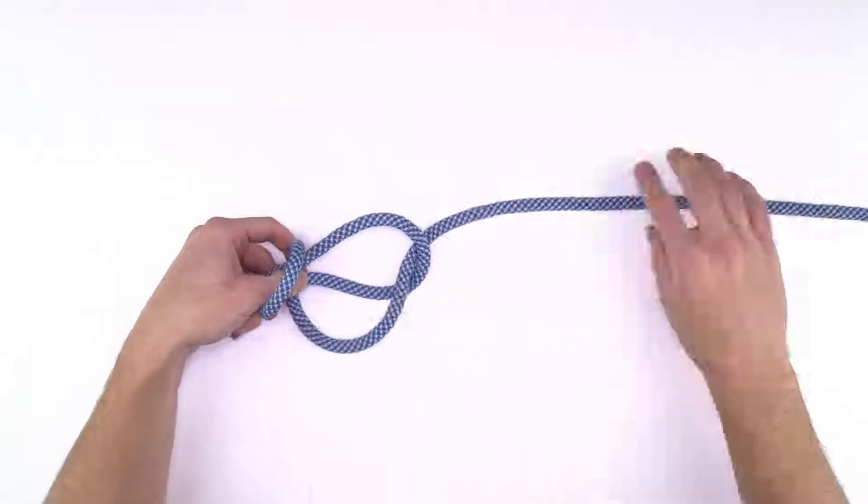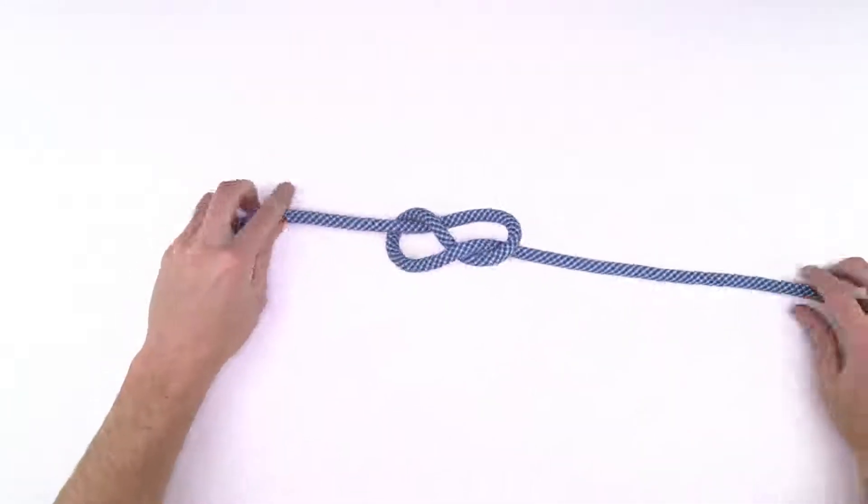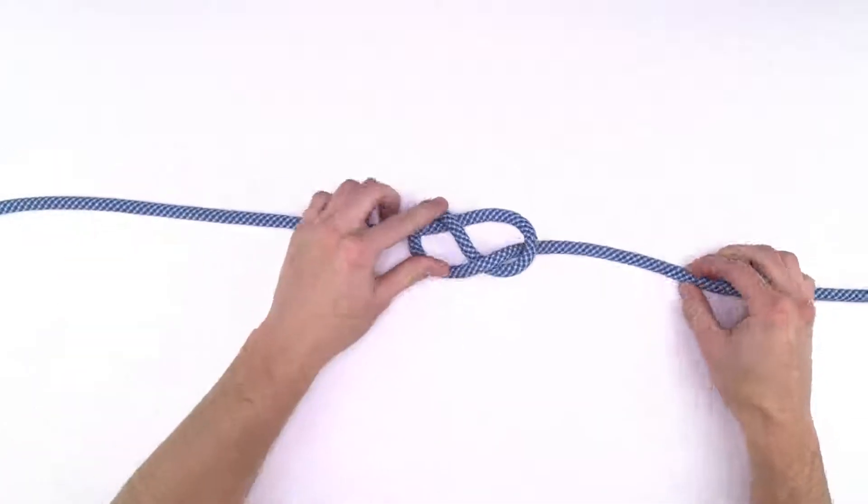At this point, you will use the tail end of your rope to go through both the leg loops and waist belt of your harness.